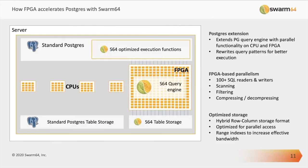So how does this work with Postgres? We're going to talk about the Swarm64 DA — Data Accelerator. It's an FPGA acceleration extension for Postgres that works with free standard Postgres as well as Enterprise DB's version of Postgres. When you start it up after installing it, there's an integration extension that interfaces with the query engine in Postgres, and for queries it can accelerate, it will develop a much more parallel query execution plan and execute that.